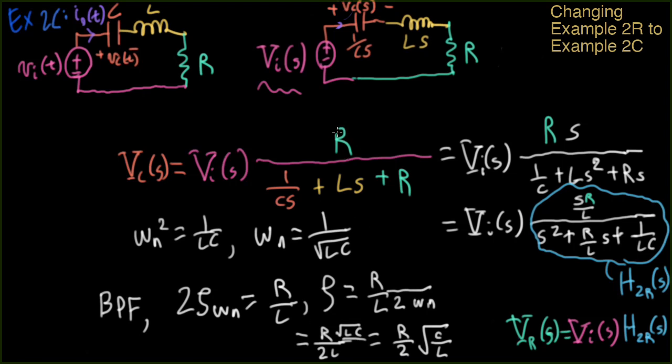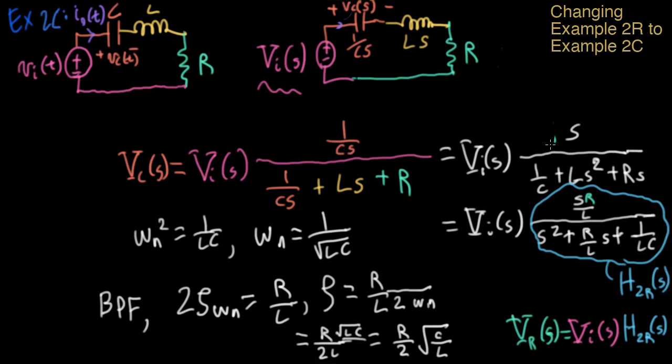And here, instead of multiplying by R, either by thinking about multiplying the current around the loop by the impedance of the capacitor or by using a voltage divider rule, I now have a 1 over CS here. So I'll have a 1 over CS here. And the S's here now cancel. So I don't have the R here anymore. And then I'll wind up with something like a 1 over LC sitting here in the numerator. And that gives me now a low-pass filter.